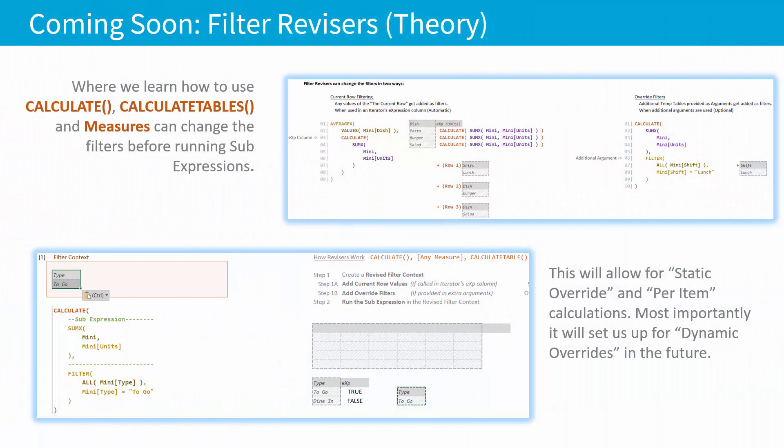The first pair of chapters coming out are both about filter revisors. In the very first chapter, we're going to talk about the theory of filter revisors, which will show us how to use the CALCULATE, CALCULATETABLE, and MEASURES functions to change the filters before running sub-expressions. This will allow us to perform the static override pattern and the per item pattern. However, even more importantly, it's going to set us up to do dynamic overrides in the near future.